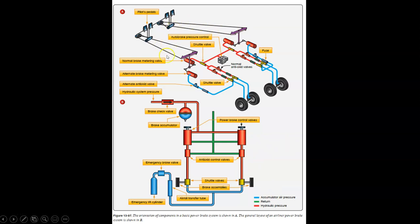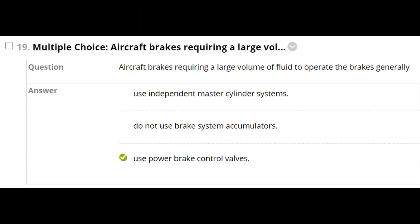The lower system is a power brake system. And when we say power brake system, we mean we have a hydraulic pump on the airplane. It's a bigger airplane. So we've got a hydraulic pump, and that will allow us to move a lot of fluid. We got the whole hydraulic system behind this. That's the power brake system. You can move a lot of fluid. So there's a question: Aircraft brakes requiring a large volume of fluid generally use power brake control valves. That's a power brake system, and that's why.